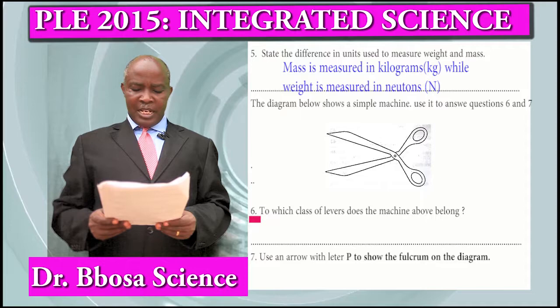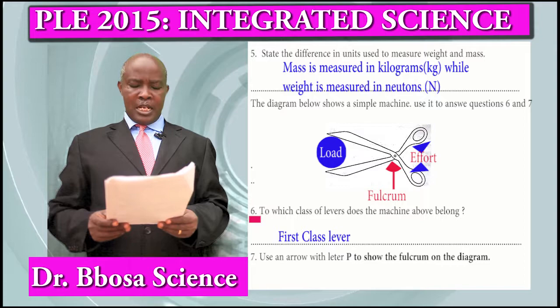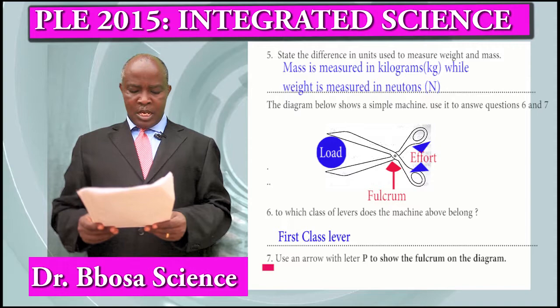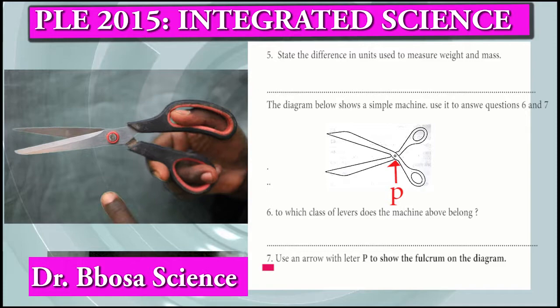The diagram below shows a simple machine. Question 6: To which class of lever does the machine belong? It is the first class lever. In the first class lever, the fulcrum is between the load and the effort. Question 7: Use the arrow with a P to show the fulcrum on the diagram. The fulcrum is located here.